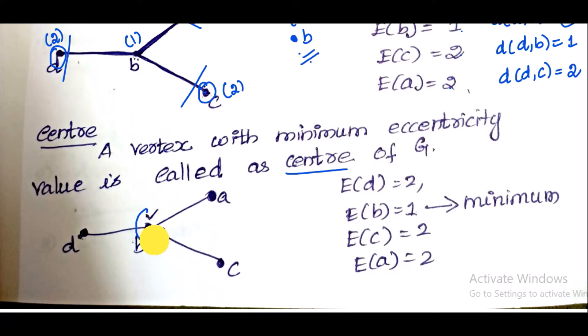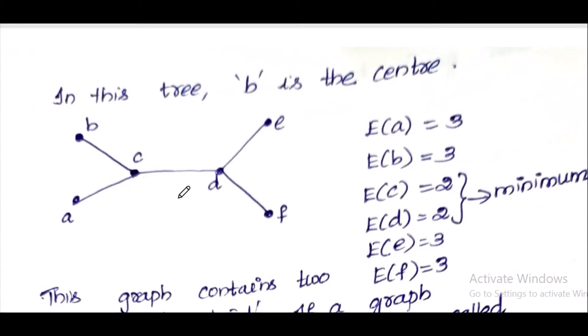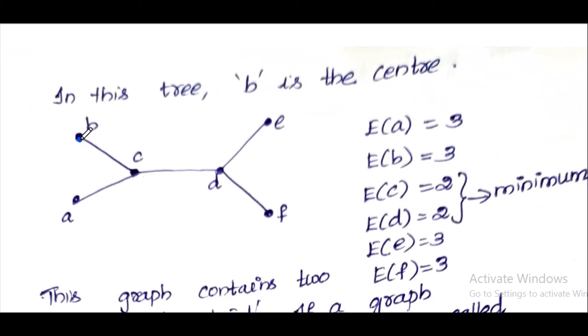So in every graph, we identify the center of the graph. Looking at this example graph, when we consider minimum eccentricity, the distance length should not be too long — the maximum of the distance is called eccentricity.